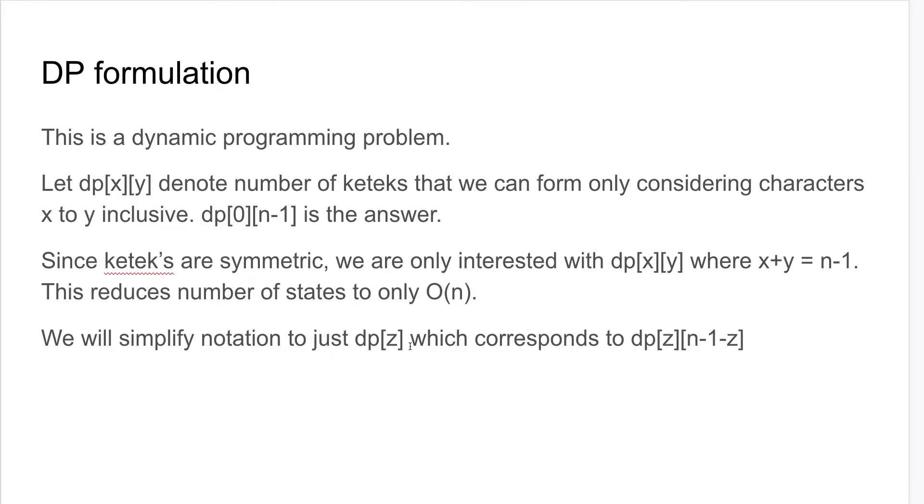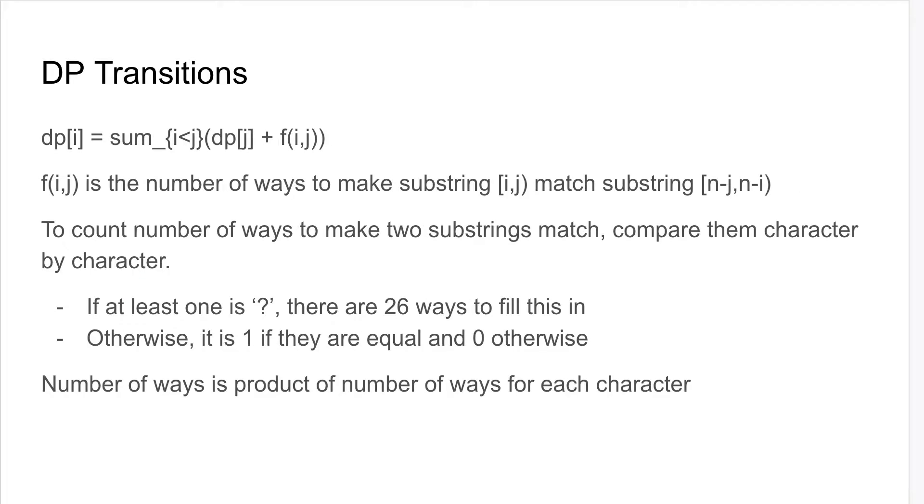We can simplify this notation to just be dp[z], which corresponds to dp[z][n-1-z], and in this case z only goes from 0 to n/2. So that's the DP state formulation, and let's go to the DP transitions. The transition is also not too bad.